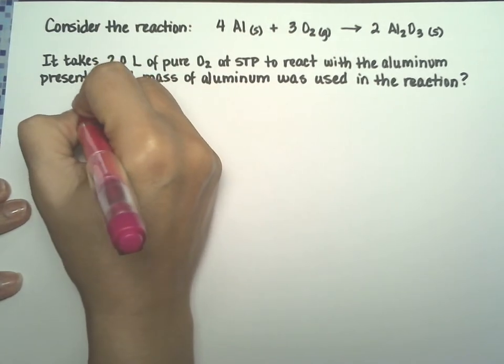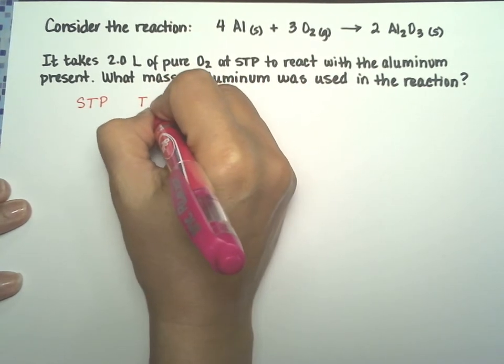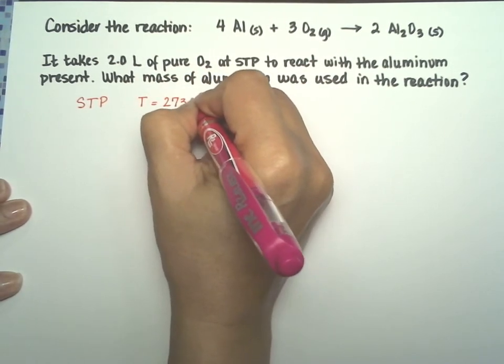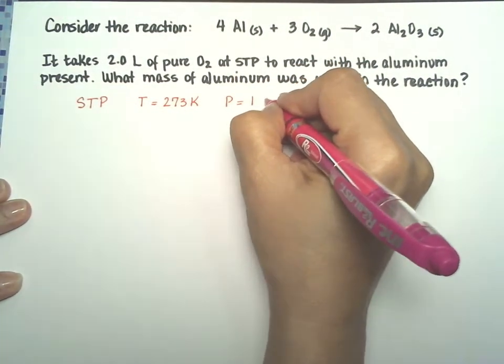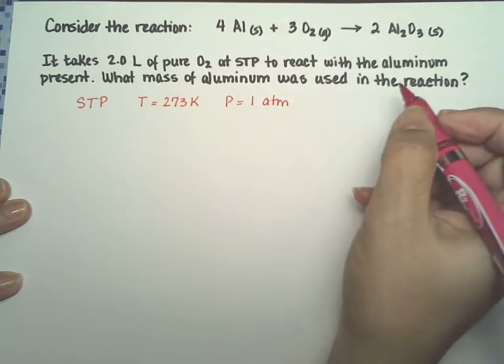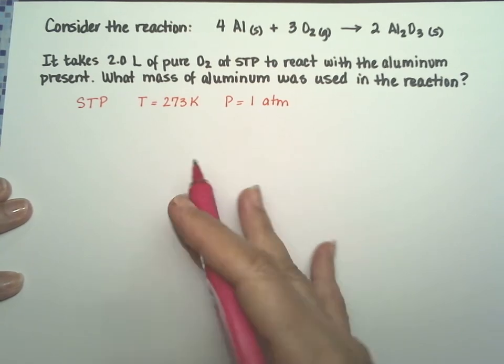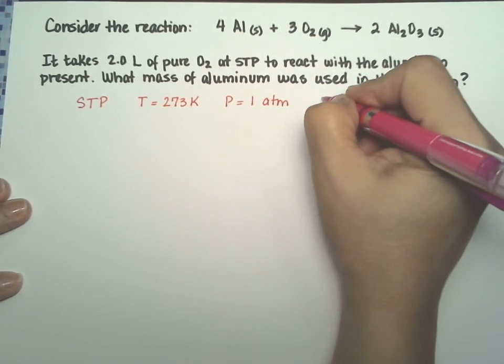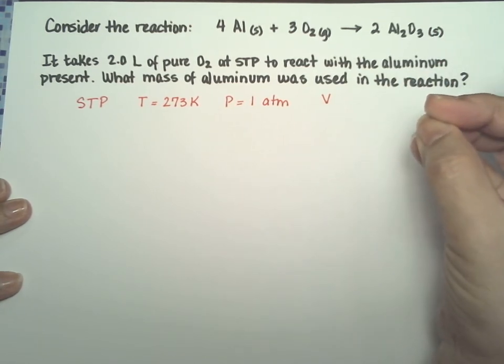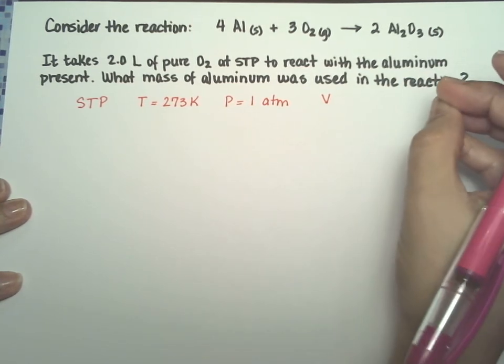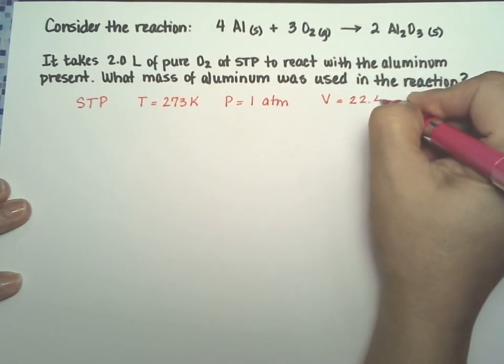So let's just do a reminder of what STP means. STP means a temperature of 273 kelvins, a pressure of 1 atmosphere, and if you remember, we said this in class but you may not remember, if you have one mole of gas at standard temperature and pressure, the volume of that mole is going to be 22.42 liters.